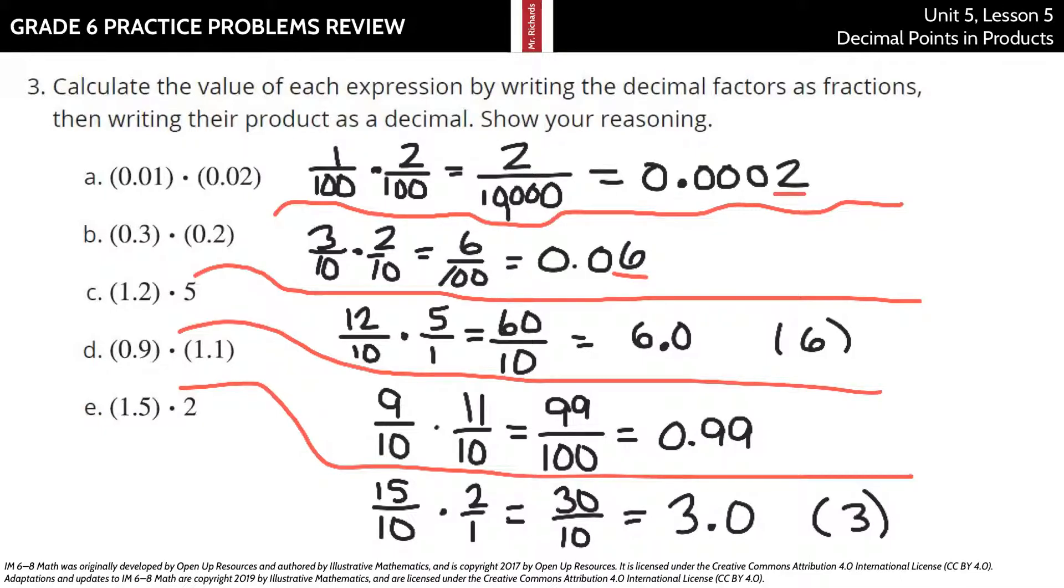And now if we calculate the value in question three of each expression by writing the decimal factors as fractions, then writing their product as a decimal. One-hundredth times two-hundredths. So one-hundredth times two-hundredths. One times two is two. One-hundred times one-hundred is ten-thousandth. So this is two ten-thousandths.